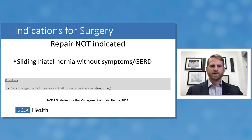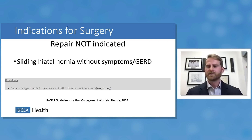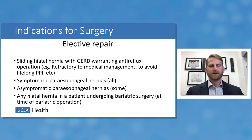Surgery is not indicated for patients with incidentally diagnosed sliding hiatal hernias who do not have GERD and have no symptoms attributable to the hernia. SAGES gives this a strong recommendation. Sliding hernias carry very low risk of serious complications like volvulus, and GERD is the main pathologic manifestation for type one hernias, so no repair is indicated unless GERD is present.